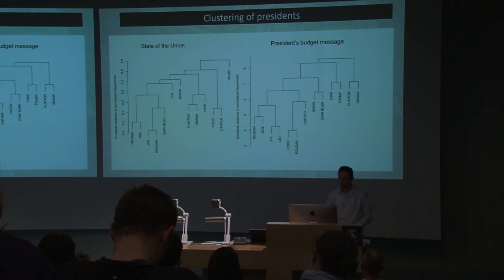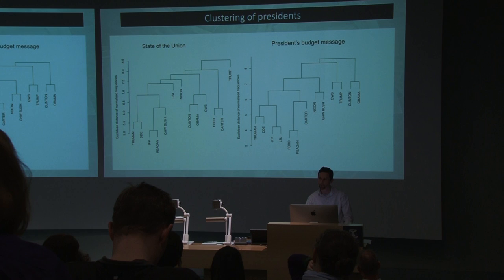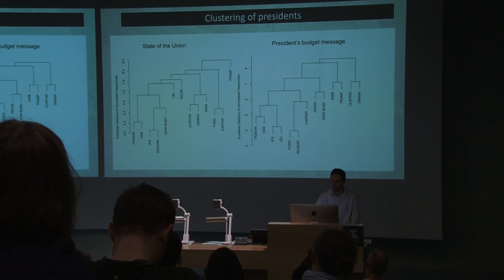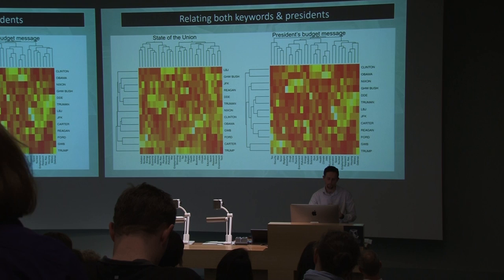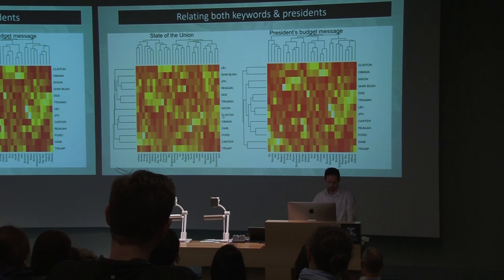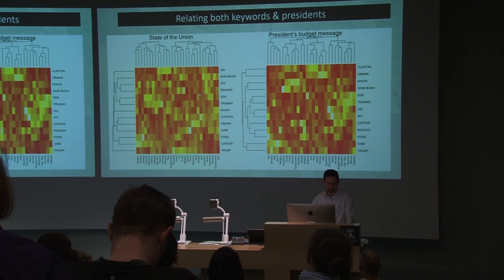When we look at the clustering, this is also reflected. But in the budget messages, Trump clusters closely to George W. Bush, at least in the prosecution of his economic messages. We can play this game again looking at both the correlations and the clustering to see how the presidents correlate with their favoured keywords, and we can see some patterns emerging. George W. Bush talked a lot about terror. Reagan talked a lot about space, God, and tax. And Ford talked a lot about energy.